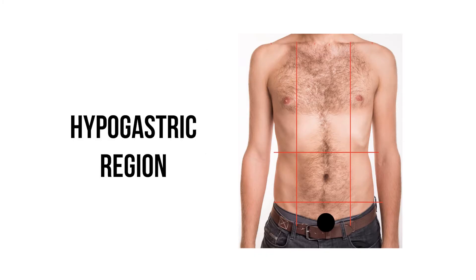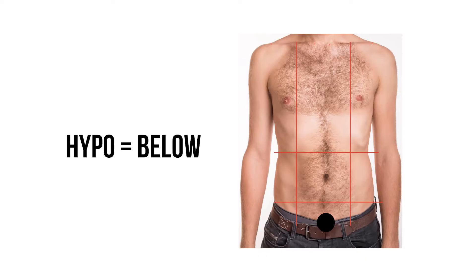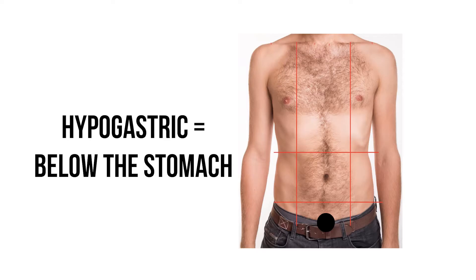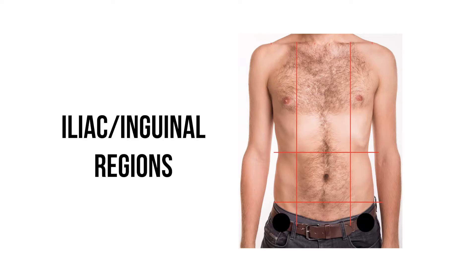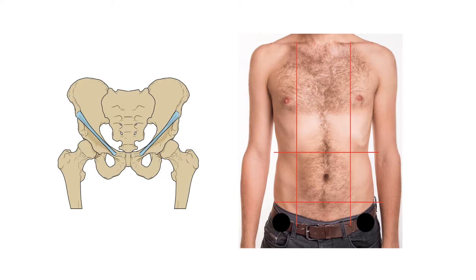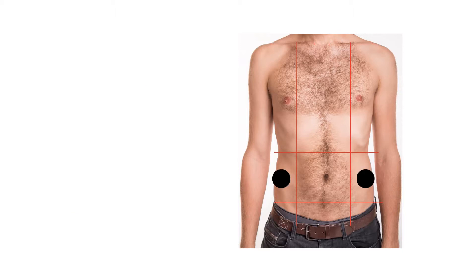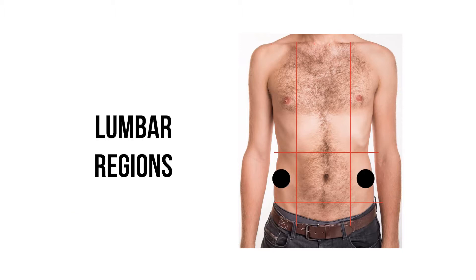At the other end is the hypogastric region — hypo is Greek for below, so this is literally the region below the stomach. On either side of this we have the left and right iliac or inguinal regions, named because they are bordered laterally by the ilia of the pelvis and the inguinal canal. Next are the two lumbar regions, named after the vertebral level they are found at.